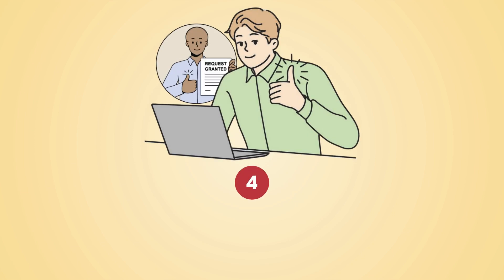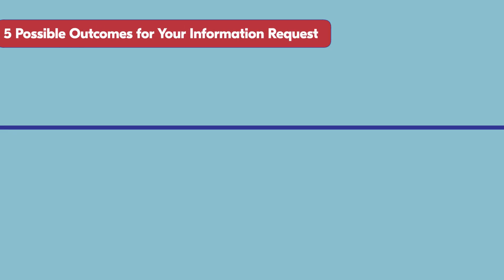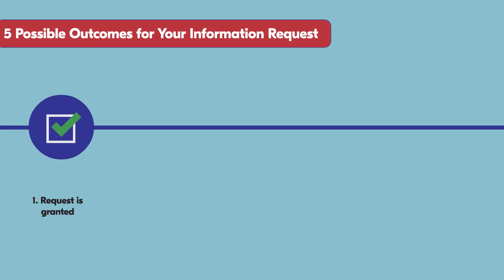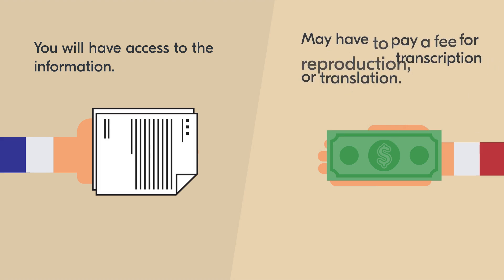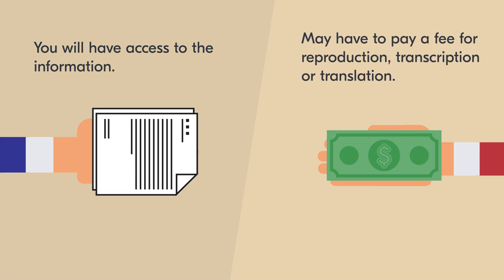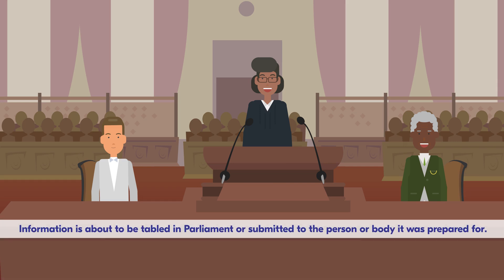Step four: the information officer must notify you of the decision on your request. There are five possible outcomes. One: your request is granted — you'll have access to the information, but you may have to pay a reproduction, transcription, or translation fee first, depending on the form of information you requested. Two: your request is granted, but access is postponed because the information is about to be tabled in parliament or submitted to the person or body it was prepared for.